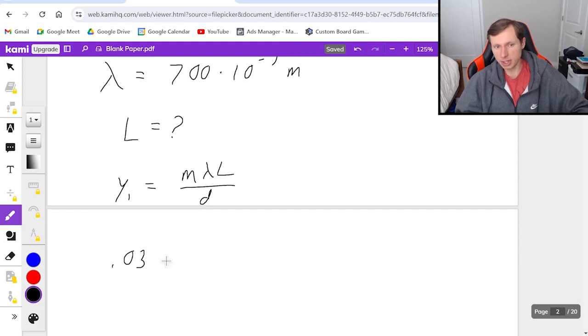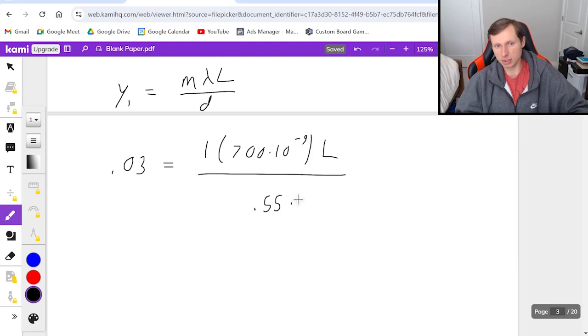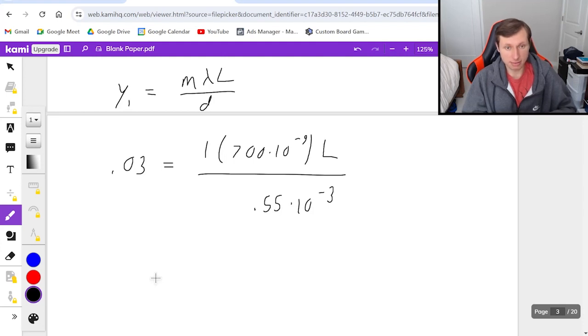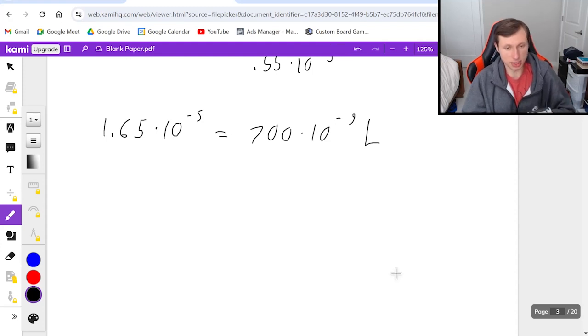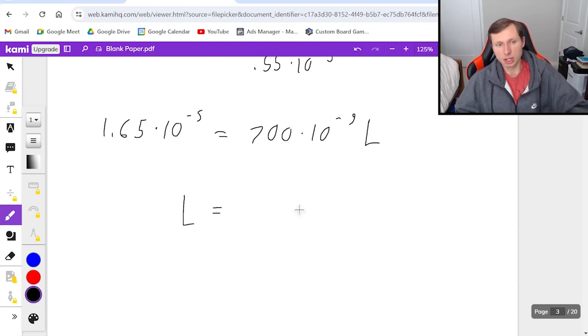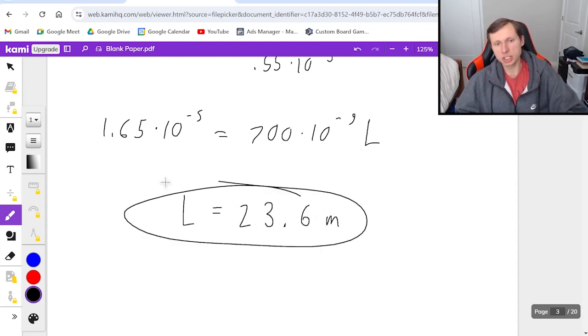So 0.03 = (1)(700 × 10^-9)(L)/(0.55 × 10^-3). I'll multiply both sides by the denominator. 0.03 × 0.55 × 10^-3 = 1.65 × 10^-5 = 700 × 10^-9 × L. Dividing both sides by 700 × 10^-9 gives L = 23.6 meters. That's how far the slits are from the back wall. Done. Not so bad. And so then I just have one more question for us, very similar.